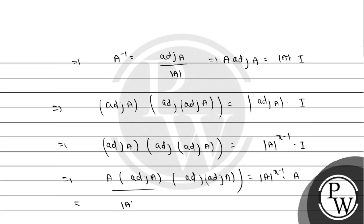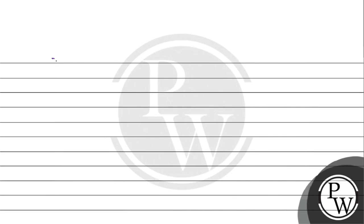A into adjoint of A, after determinant of identity matrix, or A into adjoint of A is equal to determinant of A to the power x minus 1 into matrix A. So here we have the value: A into adjoint of A, then we have determinant of A on the left side. Then we have determinant of A, adjoint of A. This value: determinant of A to the power x minus 1, determinant of A divided by x minus, and matrix A.